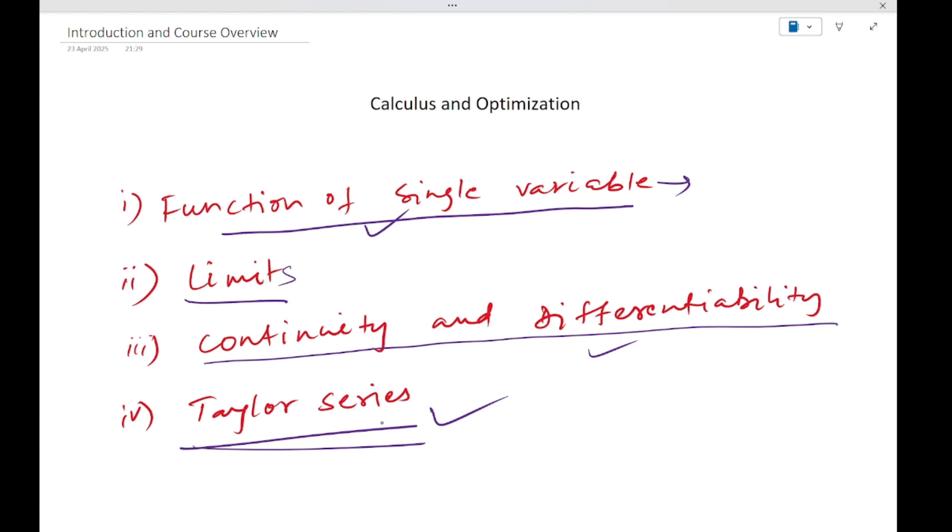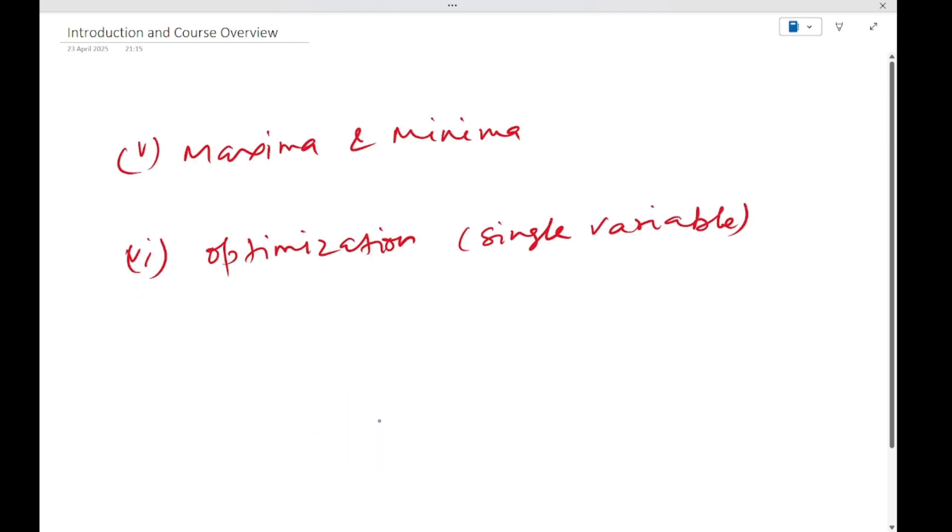Next we have maximum and minimum. How we calculate maximum and minimum of a function, when we say a function is increasing or decreasing, when we say a function has a strict maximum or minimum, localized maximum. We will see everything in detail.